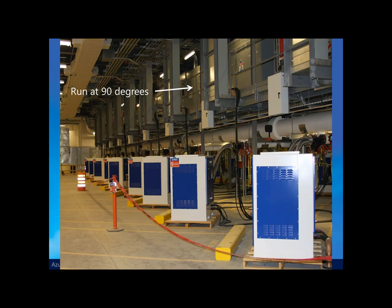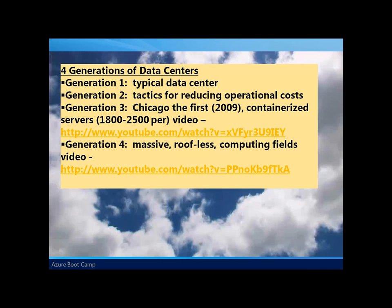When it comes to data centers, there are actually four different generations that Microsoft has identified. Generation 1 data centers are typical data centers — large but nothing special. Generation 2 tried to reduce operational costs, particularly focusing on heating, cooling, and electricity to optimize for large data centers. Generation 3 — Chicago being the first — is a total containerized server environment where the warehouse essentially holds a set of truck trailers, each containing 1,825 servers. There's a video at the link shown on screen which describes that particular type of data center.